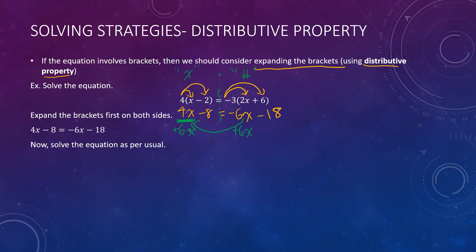We add 6x to both sides so the negative 6x goes away. Then I'm left with 10x minus 8 equals negative 18. My next step: the negative 8 is on the wrong side — it should join the other numbers on the right. Because I decided the x's go on the left, numbers go on the right. That's why it's a good reminder to write down where your variables and numbers are going, so you stay consistent the whole way through.